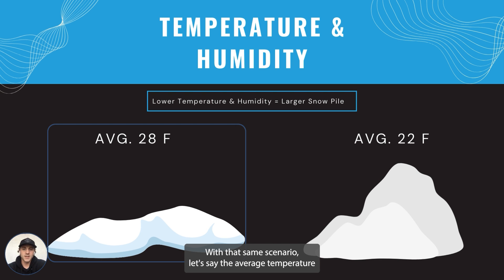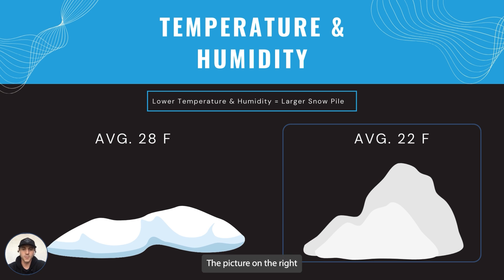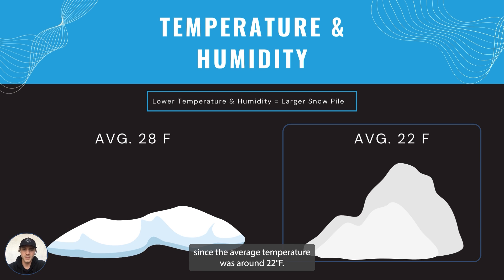With that same scenario, let's say the average temperature was 22 degrees Fahrenheit. With the same amount of water flowing through the system, the picture on the right is going to appear a lot larger than the picture on the left, since the average temperature was around 22 degrees Fahrenheit.